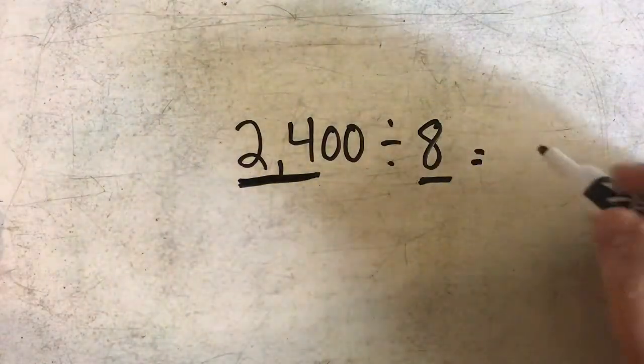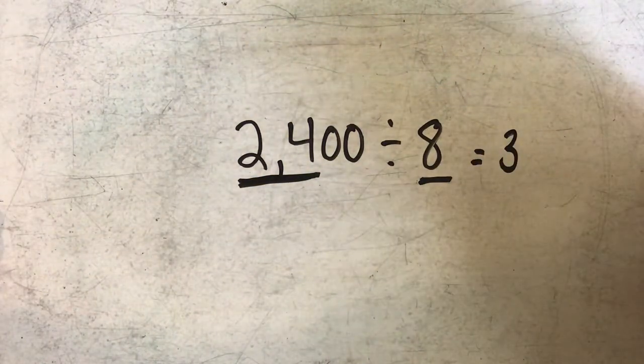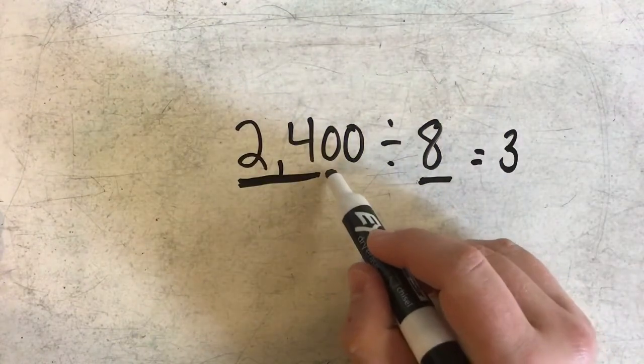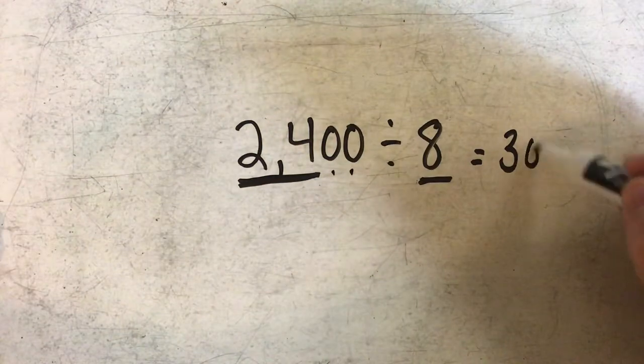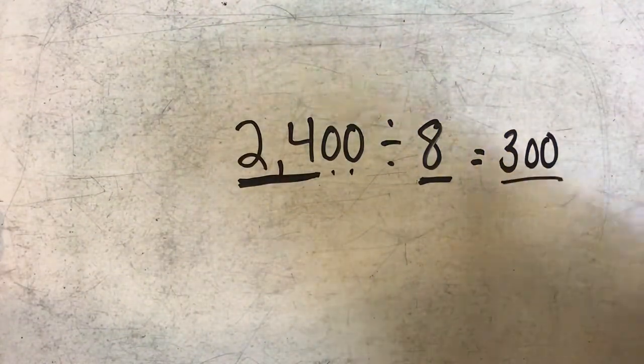I know that 24 divided by 8 equals 3, but I need to include the zeros in my answer. So 2,400 divided by 8 equals 300.